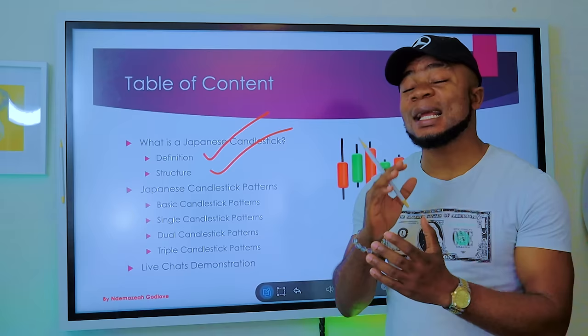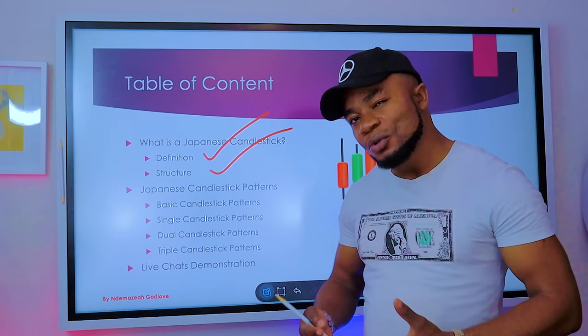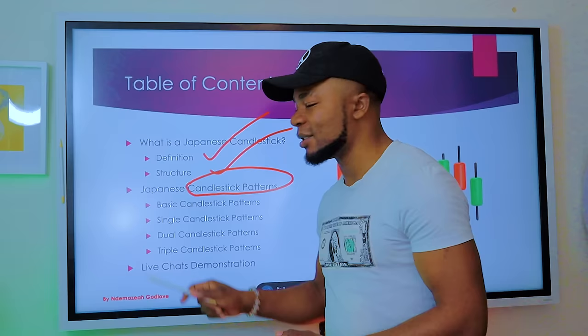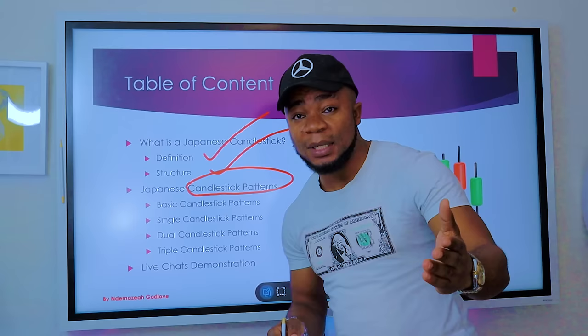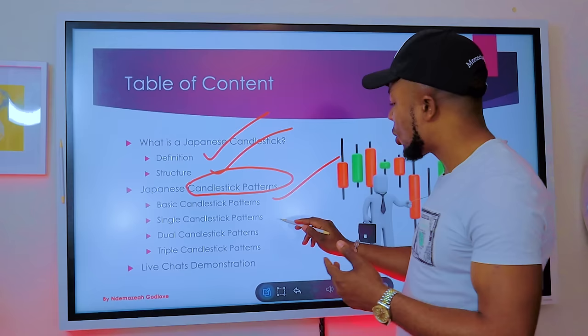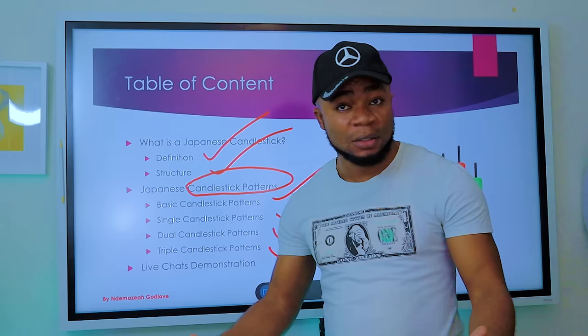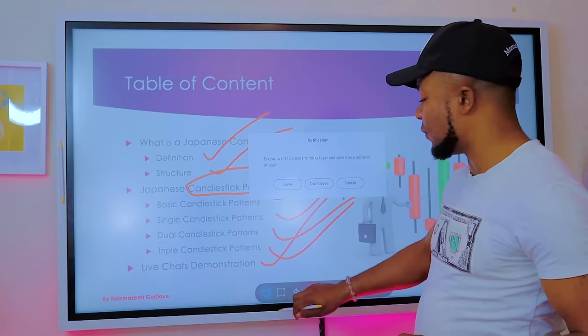If you are a technical trader — and 80 percent of forex traders are technical traders — what you use to generate signals is what they call Japanese candlestick patterns. A particular pattern can form, and once that pattern forms it shows you the market can be going up or going down. Under Japanese candlestick patterns we'll cover basic, single, double, and triple patterns, and we'll also go on MT4 and demonstrate everything on a live chart.